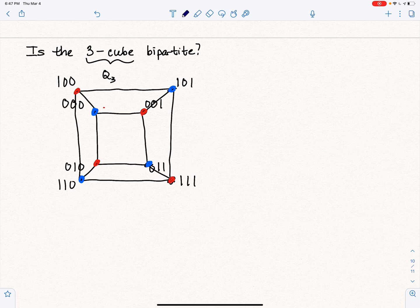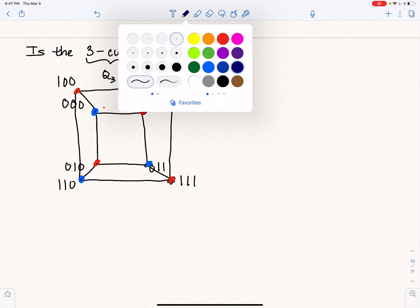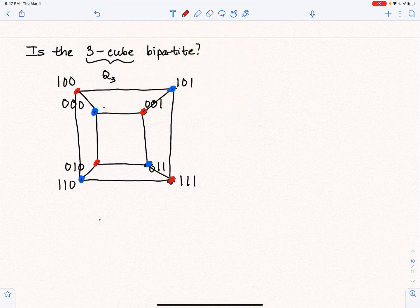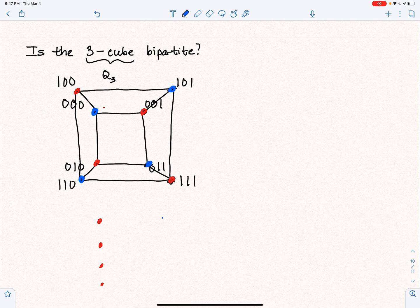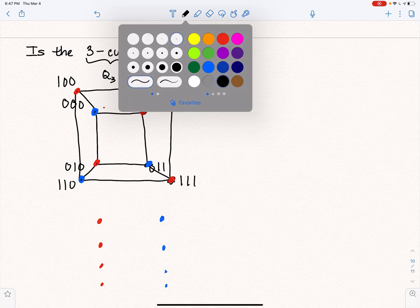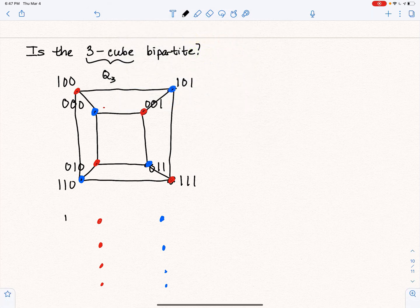Now, here is what that bipartite graph looks like. We're going to put the red vertices on one side. We're going to put the blue vertices on the other. So red vertices being, well, let's see,